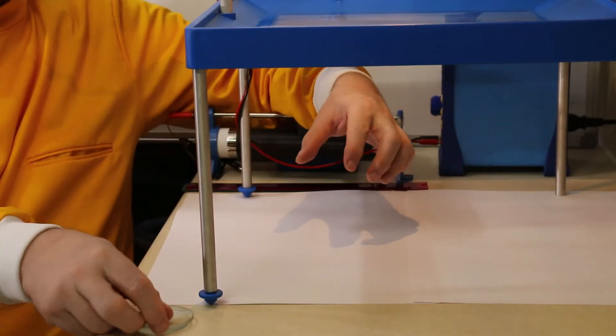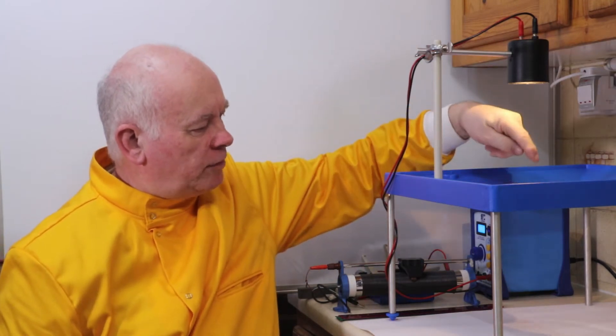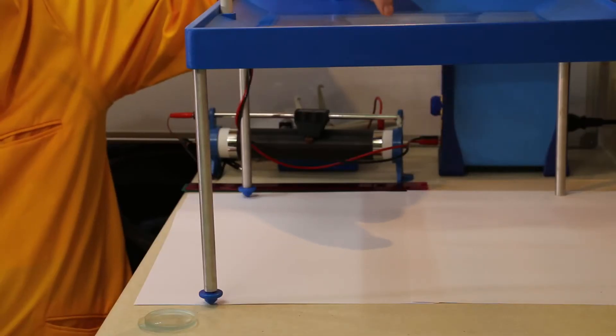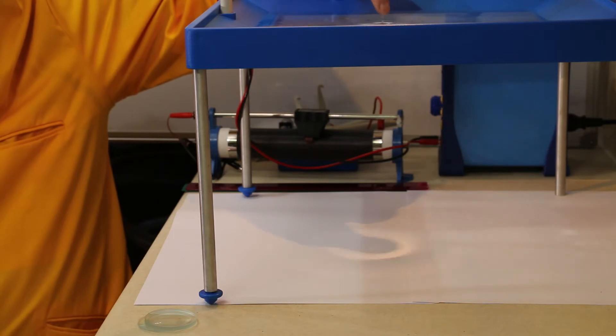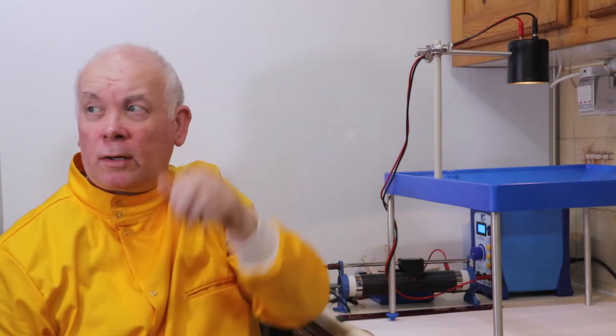So when we're looking at these waves, where we see a bright piece, that's where the wave is sticking up. And where we see a dark piece, the wave is down. So we've got the crest of a wave bright and the trough of a wave where it's dark.